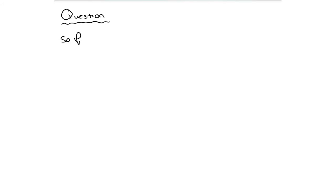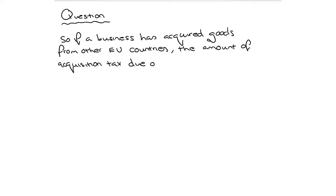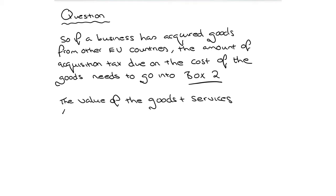So if a business has acquired goods from other EU countries, the amount of acquisition tax due on the cost of the goods needs to go into box 2. And the value of goods and services will be multiplied by the VAT rate to give you a value to go into that box 2. And the actual applicable VAT rate is the UK rate. So we don't care what VAT rate they charge in that country. We're going to be applying our own VAT rate in the UK to those goods.